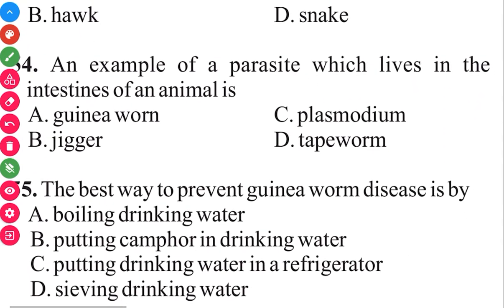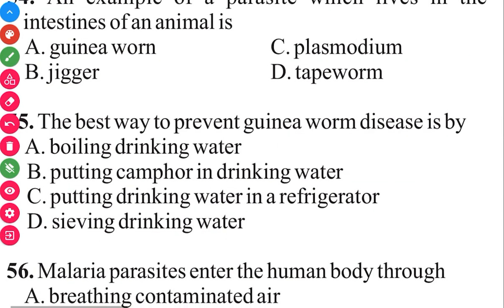Question 55. The best way to prevent guinea worm disease is boiling drinking water. The answer to question 55 in 3, 2, 1 is A, boiling drinking water.